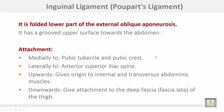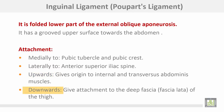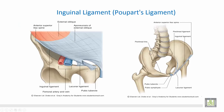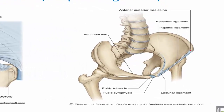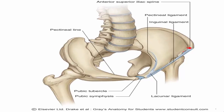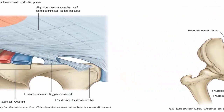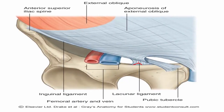The inguinal ligament, or Poupart's ligament, is the folded lower part of the external oblique aponeurosis. It has a grooved upper surface towards the abdomen. Medially it attaches to the pubic tubercle and the pubic crest; laterally to the anterior superior iliac spine. Upward it gives origin to the internal oblique and transversus abdominis muscles; downwards it gives attachment to the deep fascia, the fascia lata of the thigh. This figure again shows the inguinal ligament attached laterally to the anterior superior iliac spine and medially to the pubic tubercle and crest. It also gives an extension called the lacunar ligament.